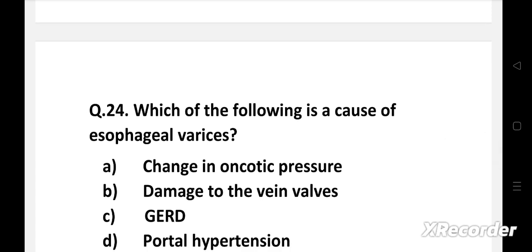Question 24: Which of the following is a cause of esophageal varices? Option A: change in oncotic pressure, B: damage to the vein valves, C: GERD, D: portal hypertension.